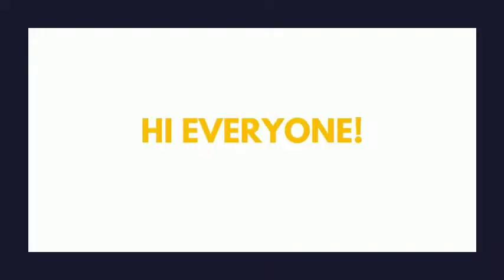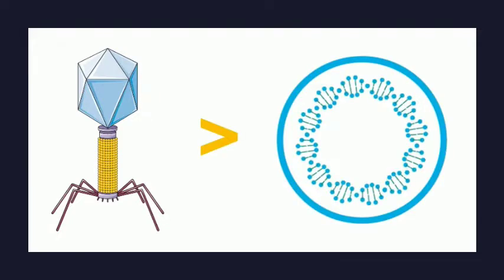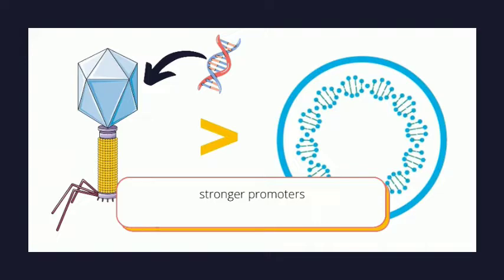Hi everyone. Bacteriophage-based vectors of E. coli offer strong advantages over plasmid vectors since they can load larger fragments of foreign DNA, have stronger promoters to express the cloned genes better, and the transduction efficiency and success rates are always higher than that of transformation.